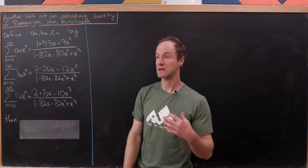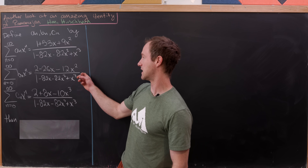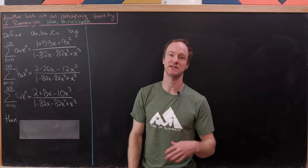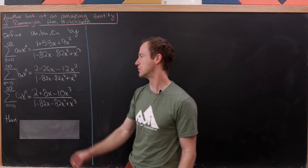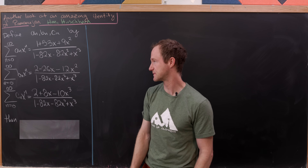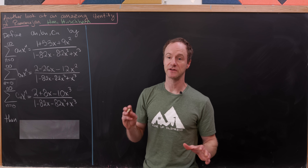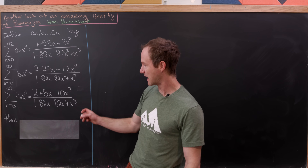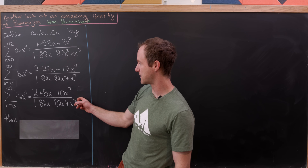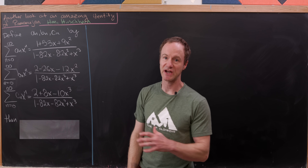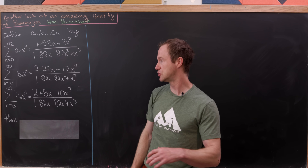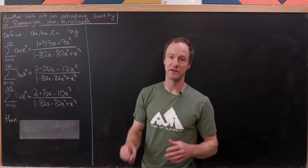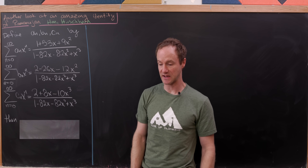Likewise, if we expand this power series — notice the denominator is the same, but now the numerator is 2 − 26x − 12x² — that'll define the sequence B_N. And finally, if we expand the one with numerator 2 + 8x − 10x³, that will define the sequence C_N.